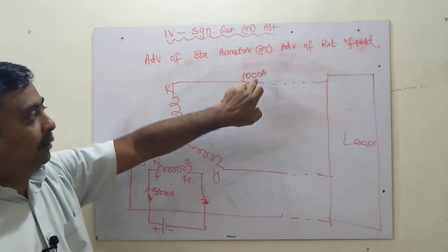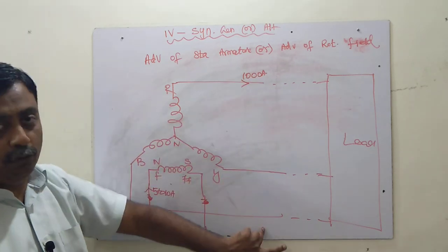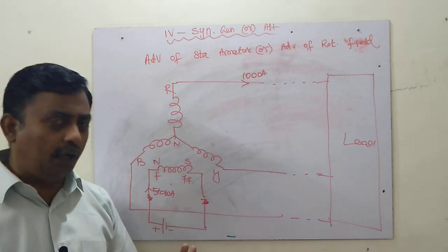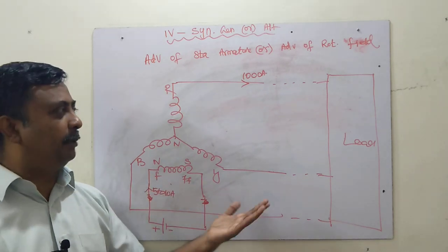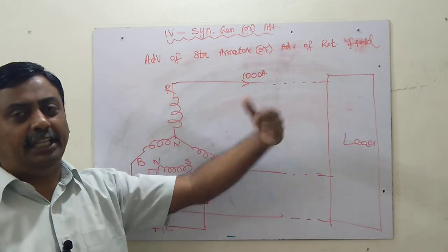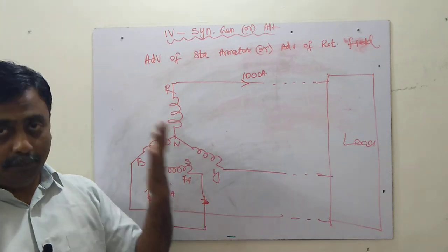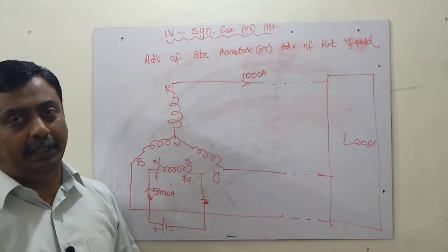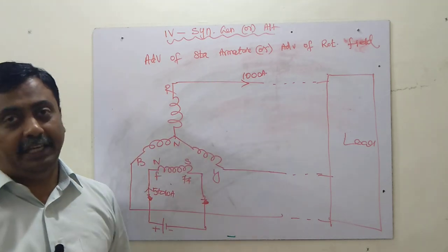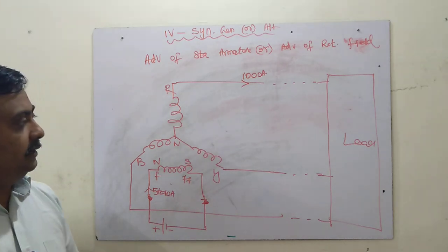A second advantage is the number of slip rings required. If we use a rotating armature (three-phase), we would need three slip rings and brush assemblies. But with a rotating field (DC supply), we need only two slip rings. These are the two major advantages. Additionally, cooling of the stationary armature is easier. These are the main reasons we go for a stationary armature.